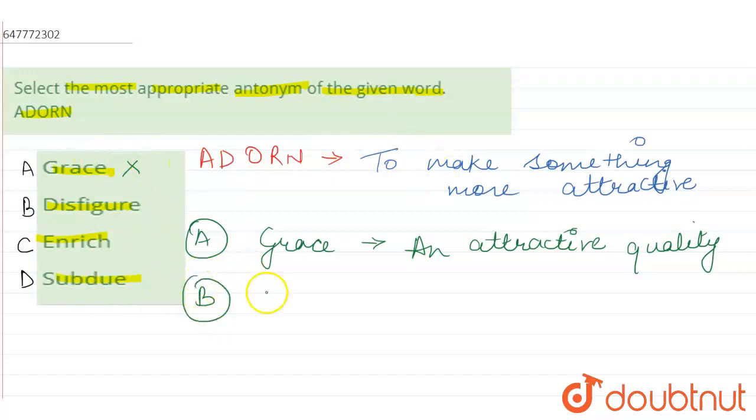B option is disfigure. Disfigure meaning is to destroy something.